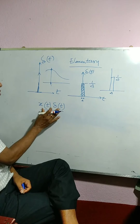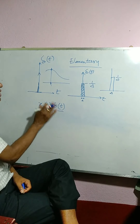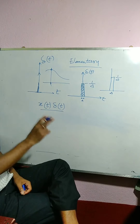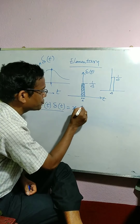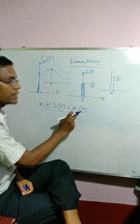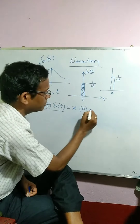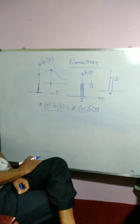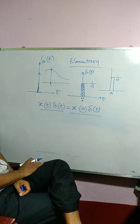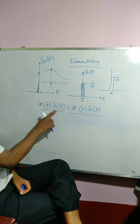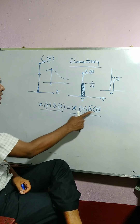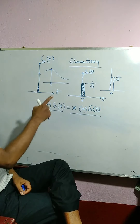That means, you are multiplying delta(t) with the value of x(t) only at t equals to 0. That means we can write it as x(0) — the value of the signal x(t) at t equals to 0 — multiplied with delta(t). This is an important point you should keep in mind: x(t) into delta(t), that means multiplying a signal with the delta signal, is nothing but multiplying the delta signal with the value of the signal only at the origin.